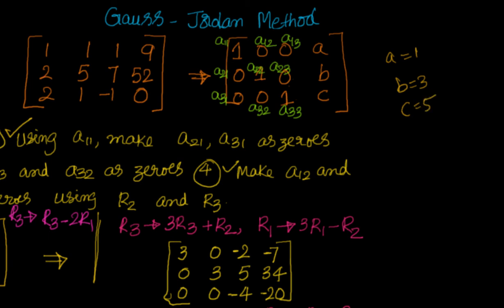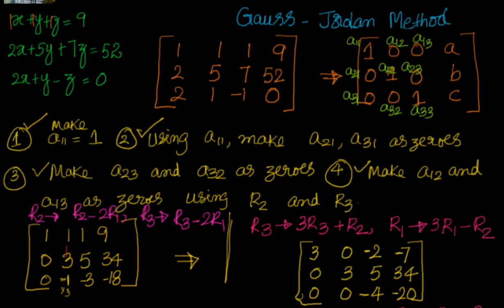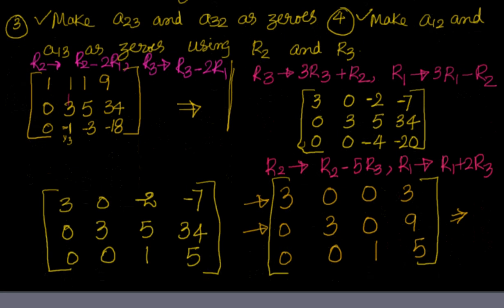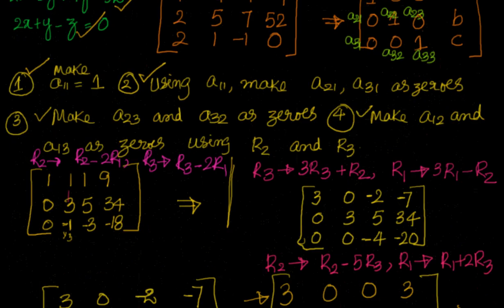The solutions are x equal to 1, y equal to 3, z equal to 5. Let's verify: 1 + 3 + 5 = 9, correct. 2×1 + 5×3 + 7×5 = 2 + 15 + 35 = 52, correct. 2×1 + 3 - 5 = 2 + 3 - 5 = 0, correct. So the values x=1, y=3, z=5 are verified.